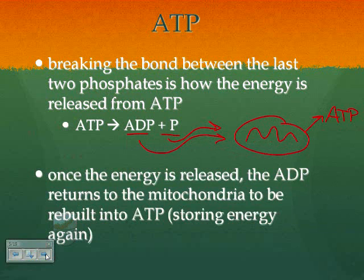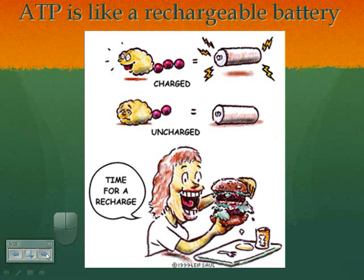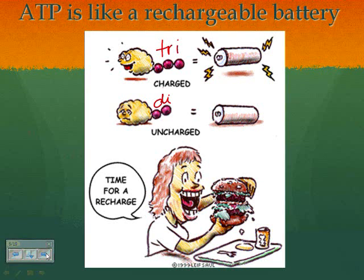So they're just going to get recycled over and over. This cartoon pretty much says it perfectly: the charged version of ATP is tri, the uncharged is di — ADP versus ATP. And the way that we recharge is that we eat. What type of organic compound is our main source of energy? Carbohydrates. What type of carbohydrates? We break things down into glucose. What type of carb do we prefer to eat to get the most bang for our buck? Polysaccharides, like bread — starches.